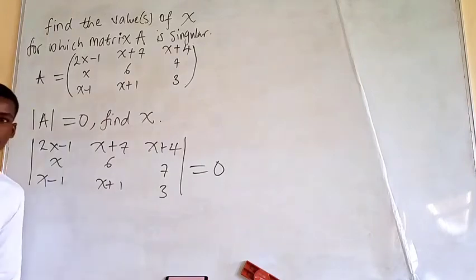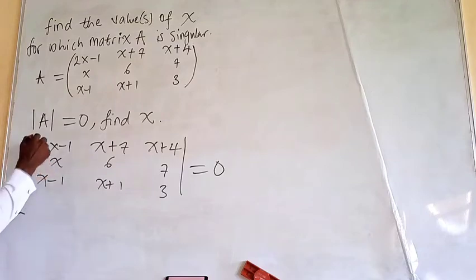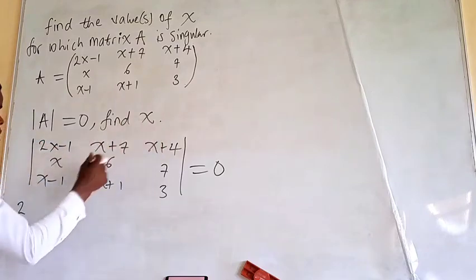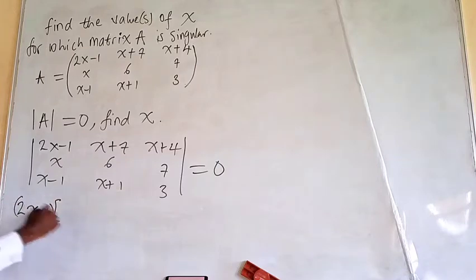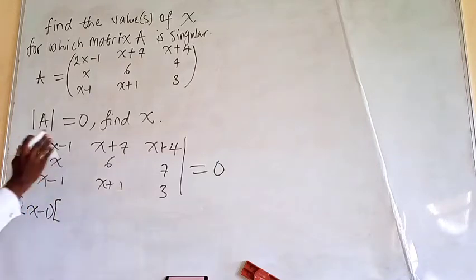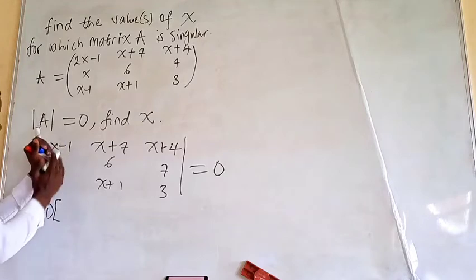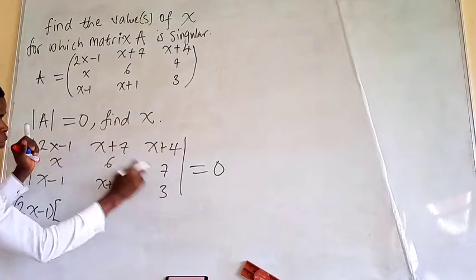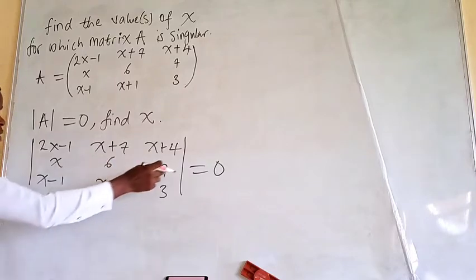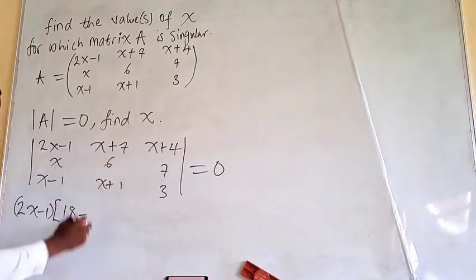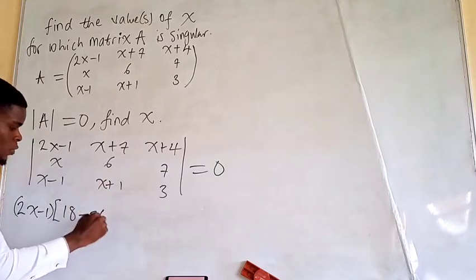So let's go ahead and expand this. I'm going to use these rows as pivots. First of all, I'll use 2x minus 1 as a pivot. We cross this row and this column and multiply the diagonal elements. So we're going to have 6 times 3, which is 18, minus 7 times (x plus 1).